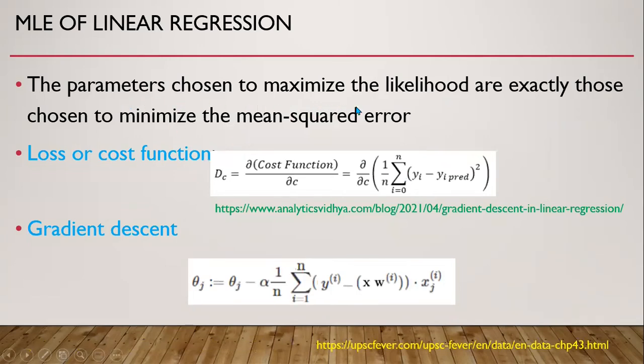The parameters chosen to maximize the likelihood are exactly those chosen to minimize the mean squared error. This is the loss or cost function, the partial derivative of the cost function. The cost function in linear regression is the mean square error itself. The gradient descent is given by this, after calculating the first partial derivative with respect to each parameter, where parameters are from 1 to j and data from 1 to n.